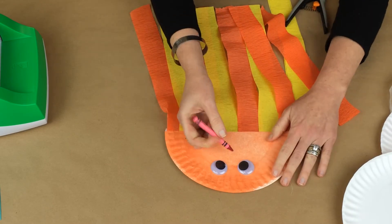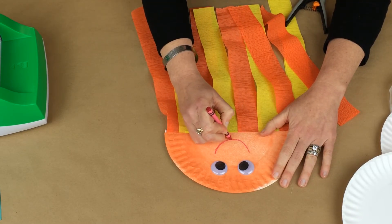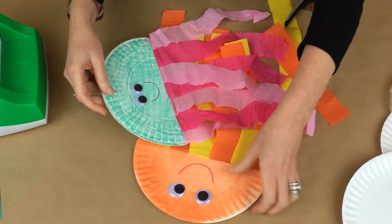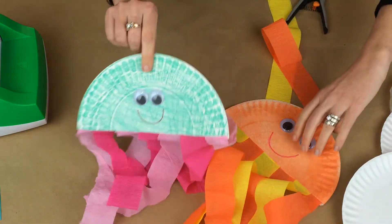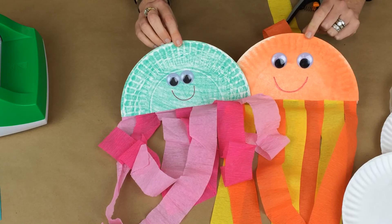Now you don't have to do jellyfish. These would be super cute as rainbows. You could do sunshines. You could do whatever tickles your fancy. But there's my jellyfish. You can do them in a couple different colors. These are a great rainy day project, after school project, fun thing to do with your kids.